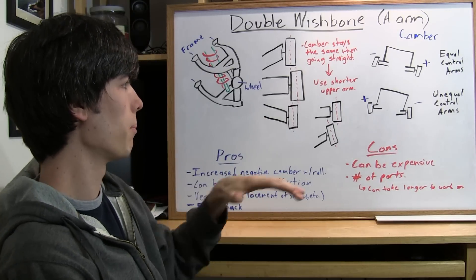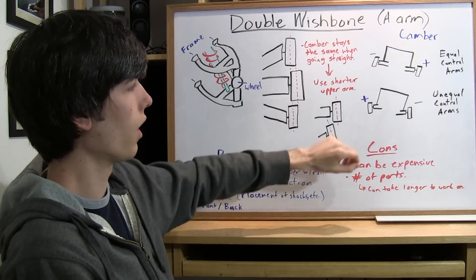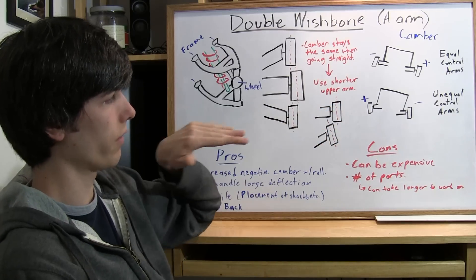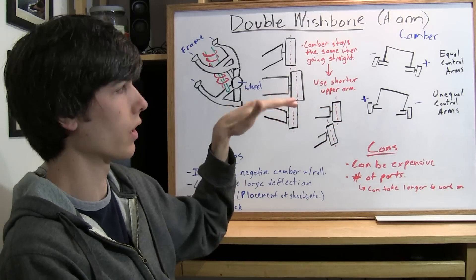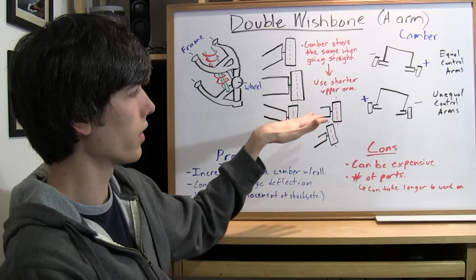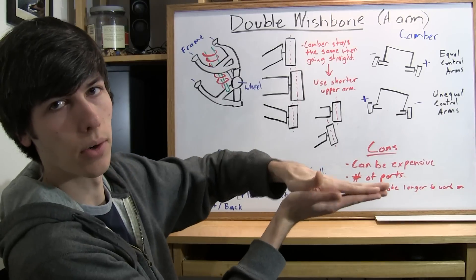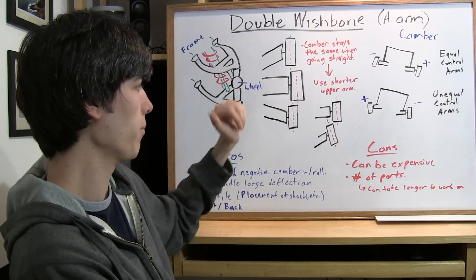That's exactly what you want to keep maximum amount of contact with the road. And then your inside tire in that corner, which doesn't have as much of the load, is going to have a slight positive camber, which means it will also be pressing flat against the road. And that's exactly what you want. Have maximum contact.